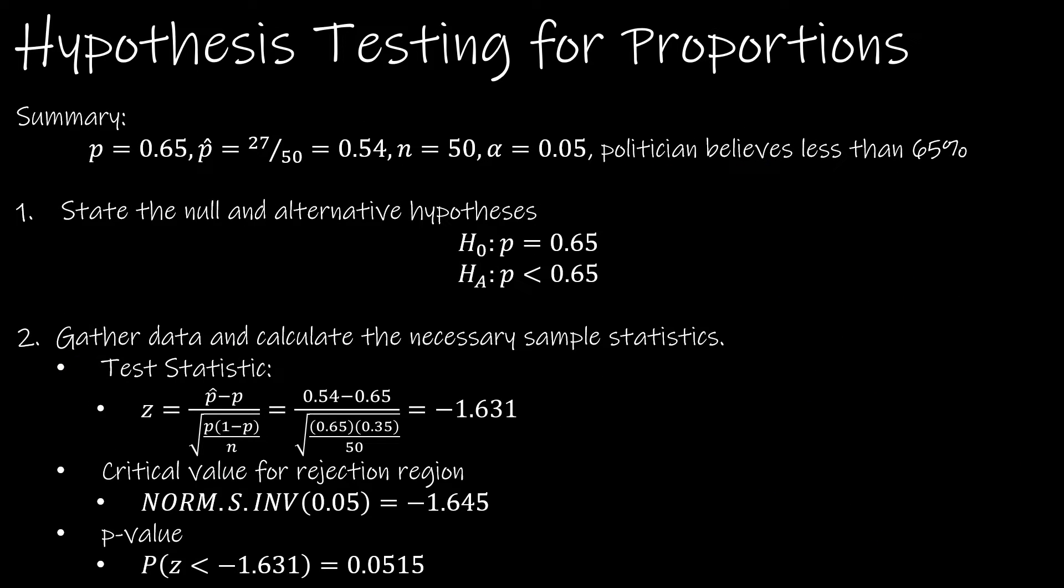Continuing our test, we've already written our hypotheses and notice these are p's for proportions as opposed to mu. When finding my test statistic for a proportion, it's going to be a z-score. All z-scores are observed minus expected over standard deviation. So observed is p-hat, expected is p (the hypothesized value), and the standard deviation is the square root of p(1-p) over n. That gives us a z-score of negative 1.631.